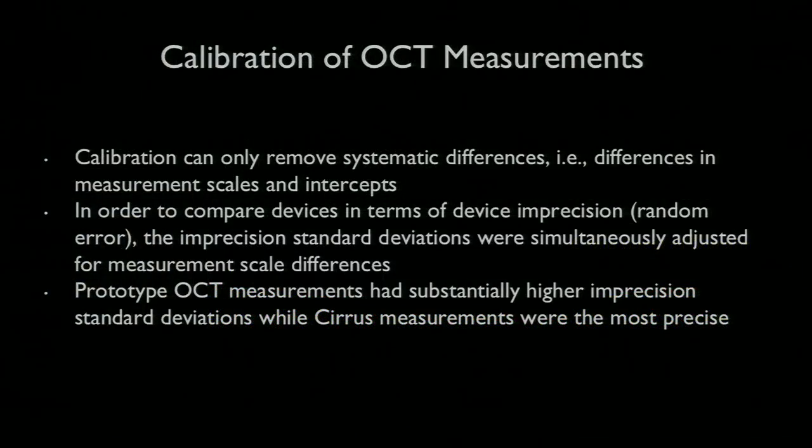So we had to develop a way of making these devices compatible with each other. And what we did was to create calibration equations that would allow us to use all of the data that we had acquired. And calibration removes systematic differences, but it does not remove random differences. So in order to compare the devices in terms of imprecision, we needed to simultaneously adjust for scale differences. And we found that the measurements that were made with the prototype OCT, not surprisingly, had the most variability, the highest imprecision, as compared to spectral domain OCT, which had the least variability.